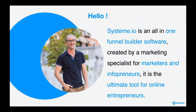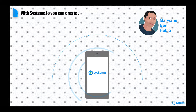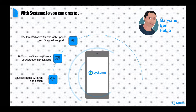Hi guys! System.io is an all-in-one funnel builder software created by a marketing specialist for marketers and infopreneurs. It is the ultimate tool for online infopreneurs. With System.io, you can create squeeze pages with very nice design, blogs or websites to present your products or services, automated sales funnels with upsell and downsell support, and secure member areas for your training and courses.